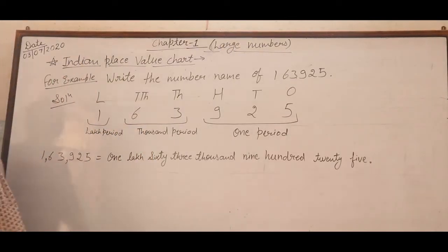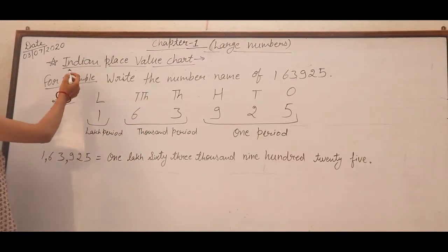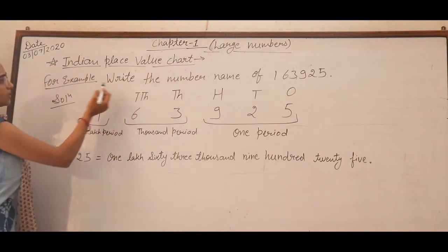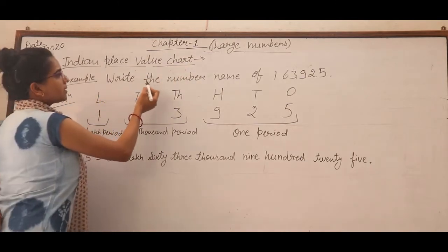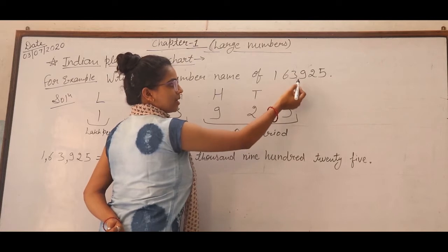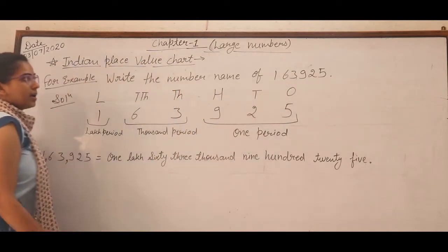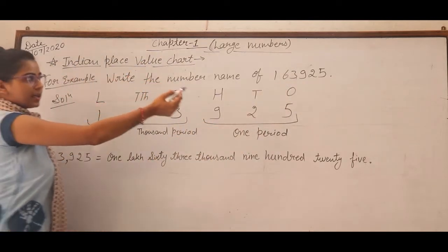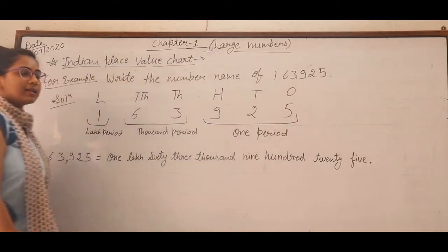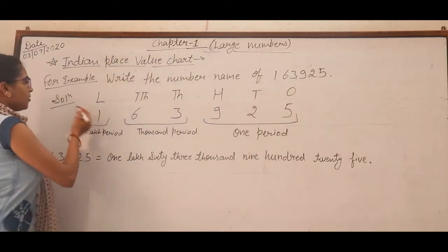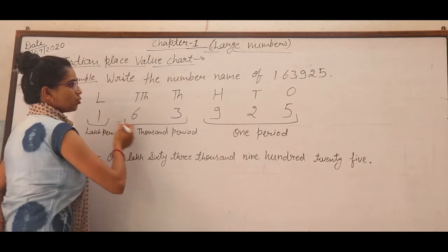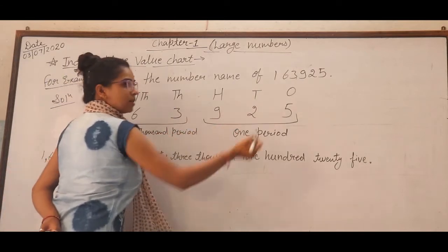Now we take an example of Indian Place Value Chart. That is, write the number name of 163925. Means हमें 163925 का number name write करना है. And first we arrange this number in place value chart form.